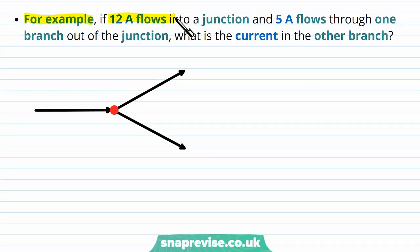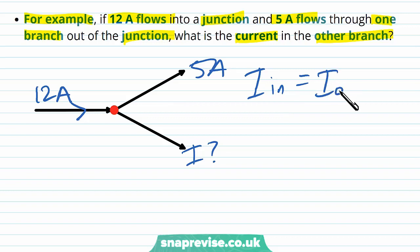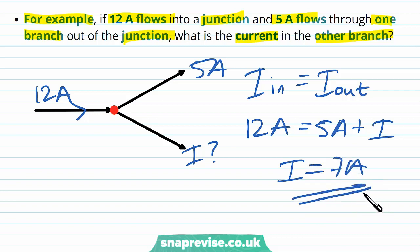For example, if 12 amps flows into a junction and 5 amps flows through one branch out of the junction, what is the current in the other branch? The current going in is equal to the current going out, so 12 amps equals 5 amps plus the unknown current i. Taking away 5 from 12, we get that the current in the other branch is 7 amps. This is how we can use Kirchhoff's first law.